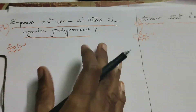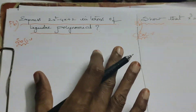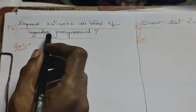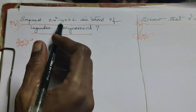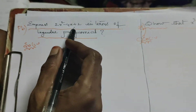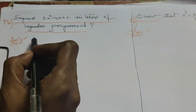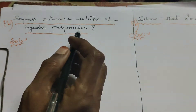Hi everyone, this is Dr. L.P. Today we are going to express 2x squared minus 4x plus 2 in terms of Legendre polynomials.